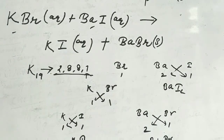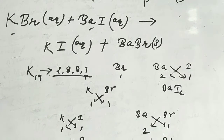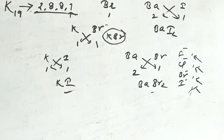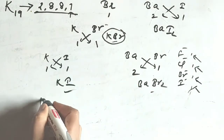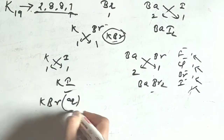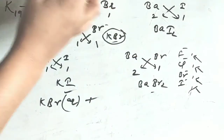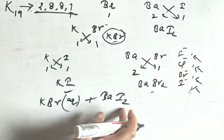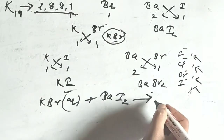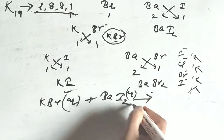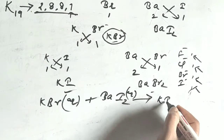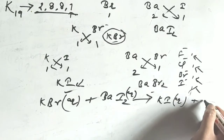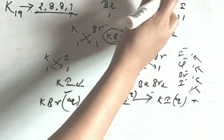So we have BaBr₂ as the product formula. Now writing the full equation: KBr in aqueous form plus BaI₂ in aqueous form gives KI in aqueous form plus BaBr₂ in solid form.